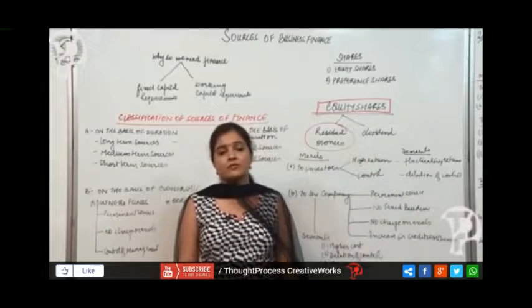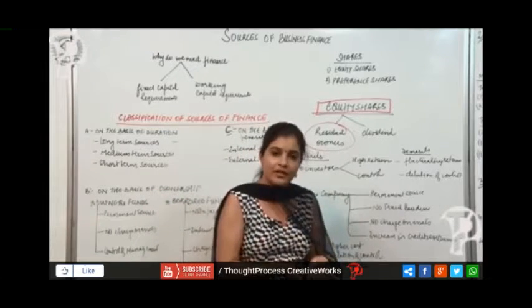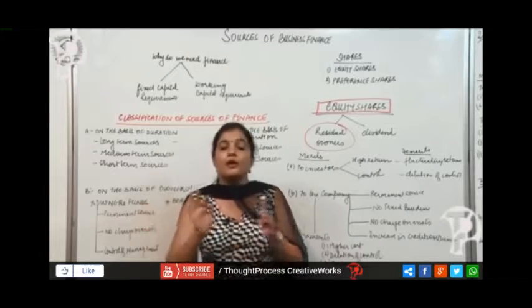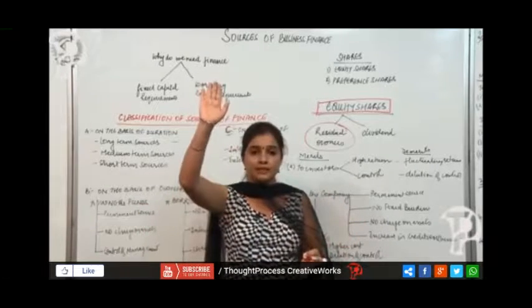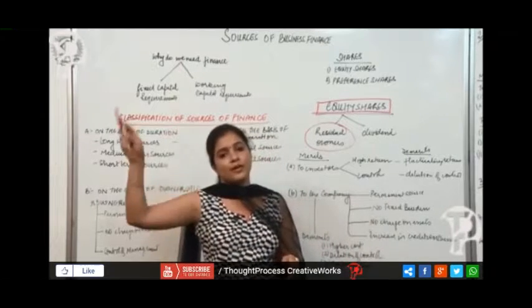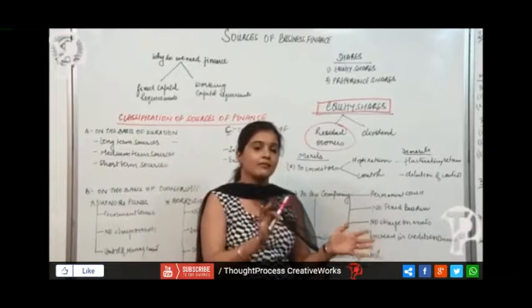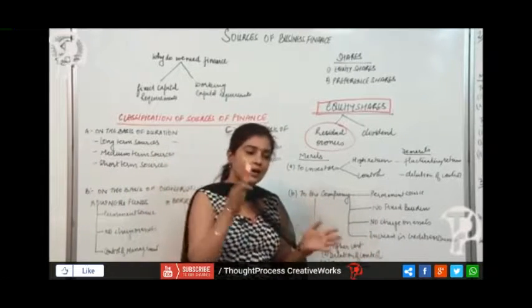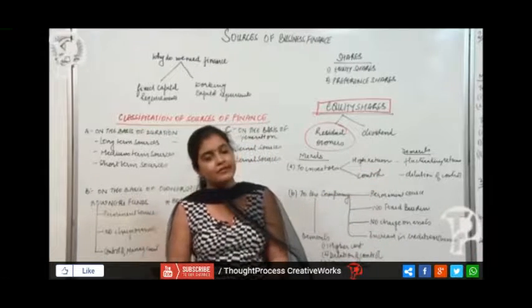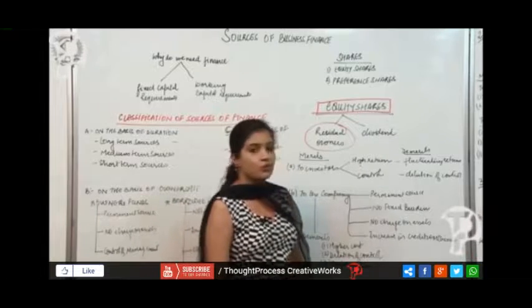Demerits for the investors would be that the returns are fluctuating. As I said, if there's profit then dividend will be given, if no profit then no dividend. If profit is less, then also no dividend. If profit is very high, you'll get a lot of dividend, otherwise you'll get a little. So the returns are fluctuating. There is not a fixed return. In FD if you put money, 8.5 percent will come every year. But if you're purchasing equity shares, some years you may have huge dividend, some years you may not have any dividend, some years you may have very little dividend. So returns are pretty fluctuating.